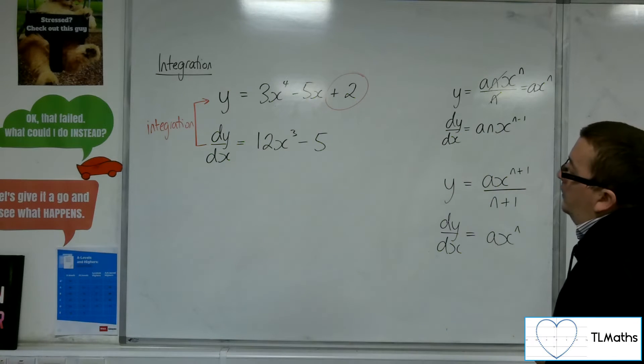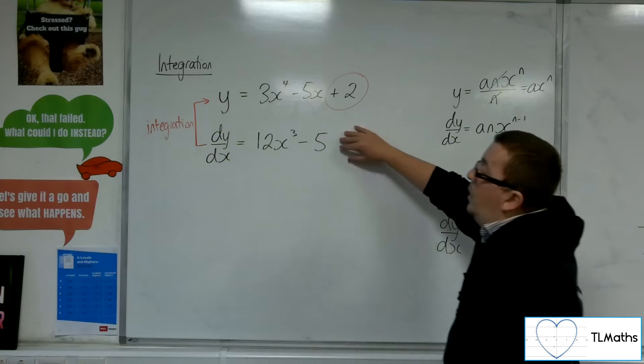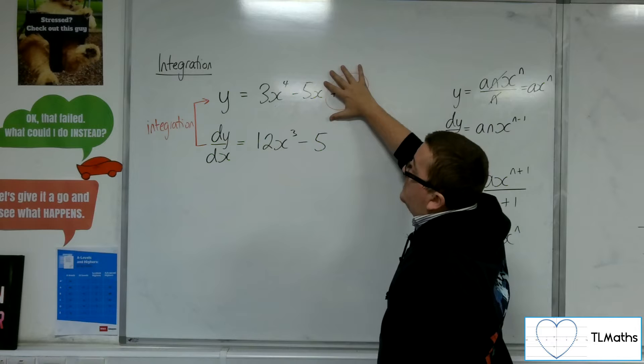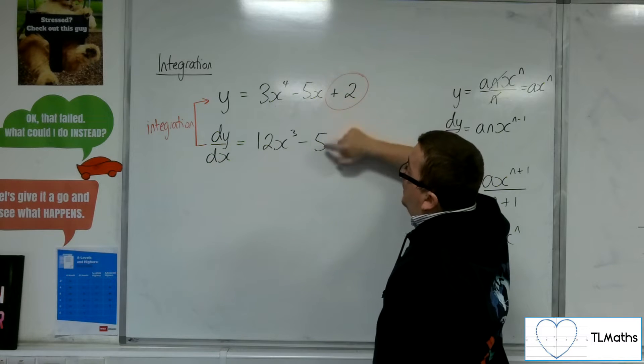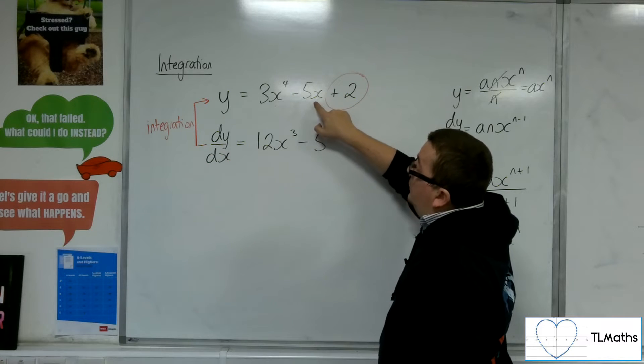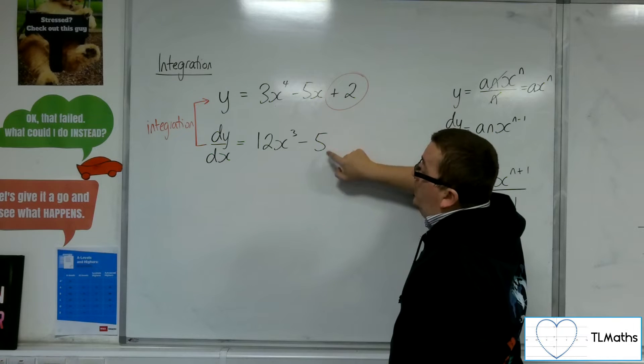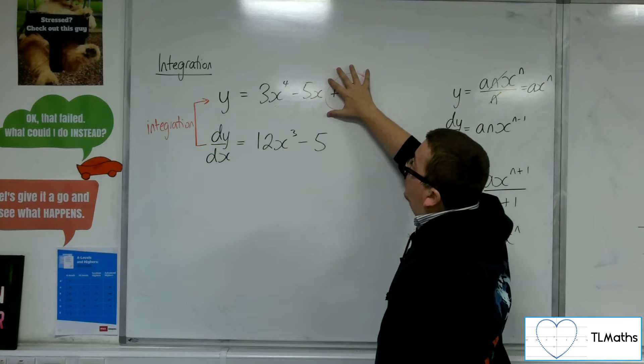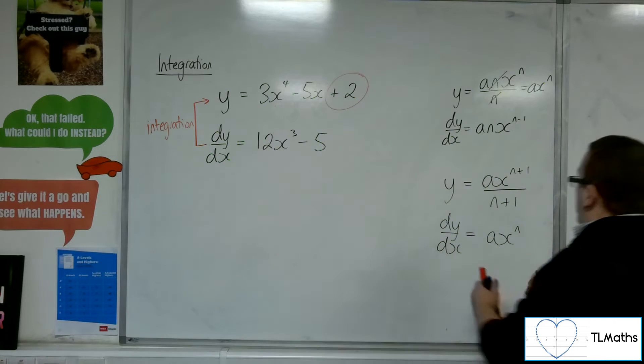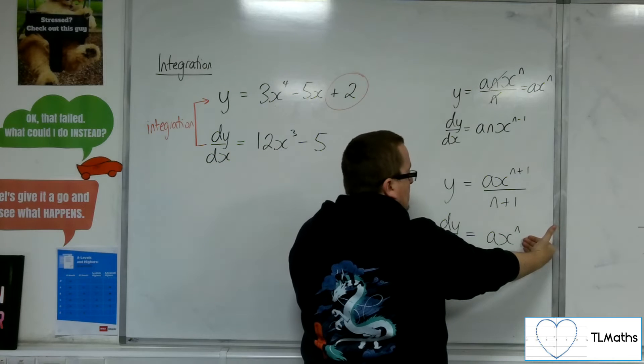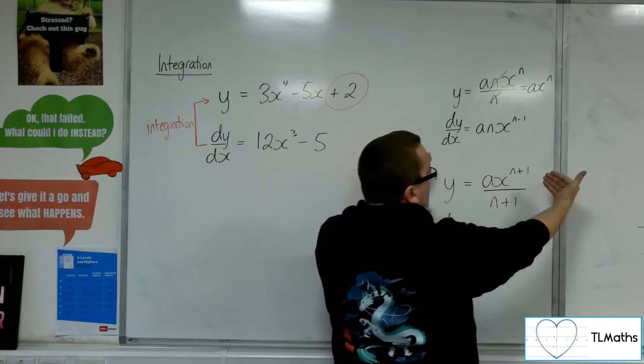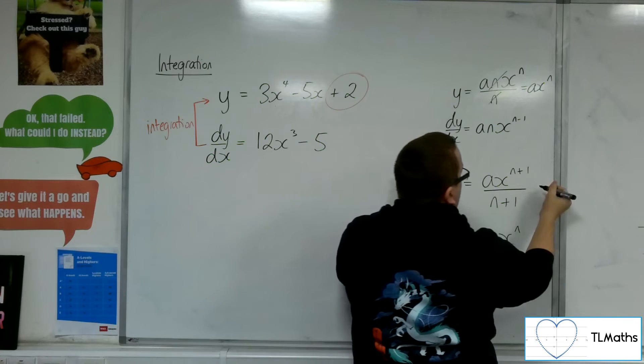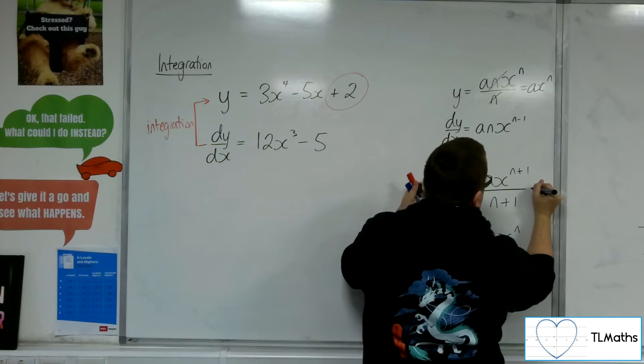So when I integrate something like 12x cubed minus 5, I can get to the 3x to the 4 minus 5x. And I know that I can get to minus 5x because minus 5x differentiates to minus 5. So minus 5 has got to integrate to minus 5x. But it's that plus 2. OK, so when I start with dy by dx equals ax to the n, I add 1 to the power and divide by the new power.